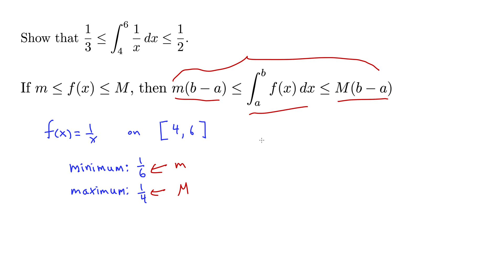So in our example here, we can compute b minus a. b minus a is simply 6 minus 4, which is 2.